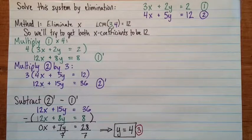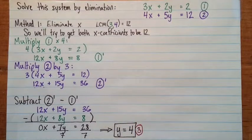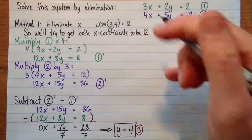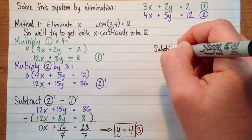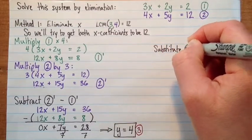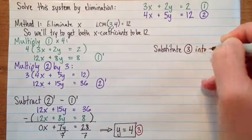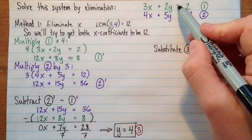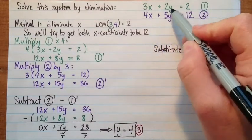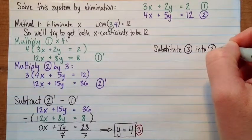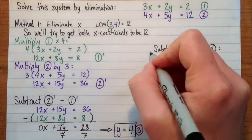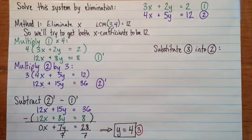Okay. So now, that's all the hard work. And now we just can substitute y equals 4 into one of the equations and solve for x. So, let's go up here. Substitute number 3 into... And these really look... There isn't one that looks harder or easier than the other. So maybe I'll do it into 2.